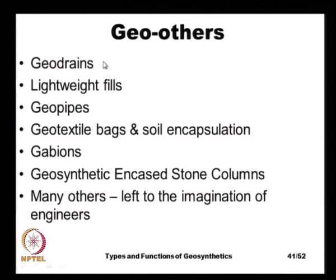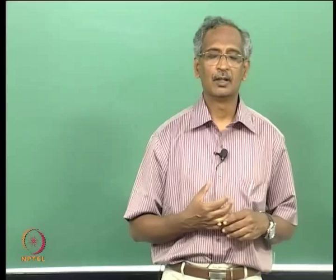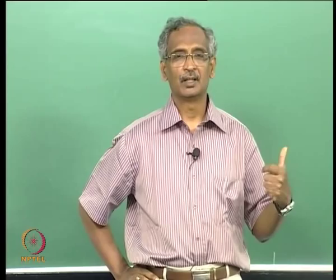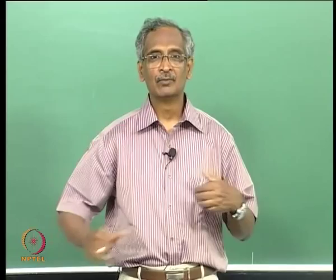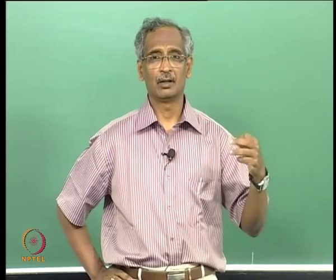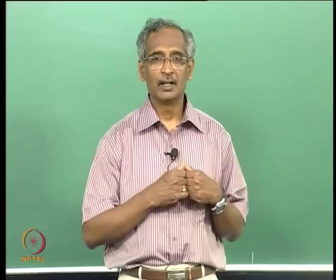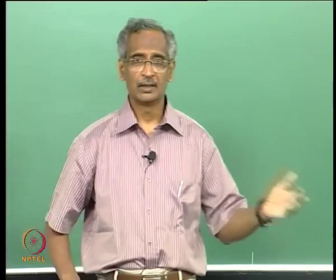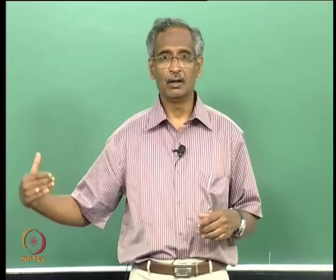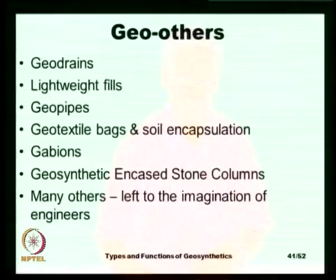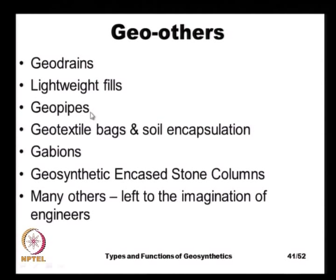There are several other geocomposites, also known as geo-others. A geodrain is a plastic pipe with perforations — when buried in soil, rainwater or groundwater is collected through the perforations, flows through the pipe, and can be pumped out or directed elsewhere. There are also a number of varieties of lightweight fills, especially those made of expanded polystyrene.